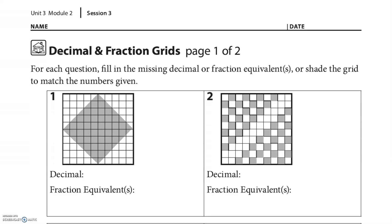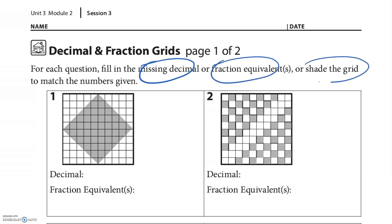Hey everyone, this is Unit 3, Module 2, Session 3 homework. As always, please try these as many as you can and pause the video, then maybe use the video to check your work. If you get stuck, use it for some help, then pause it as soon as you think you get it and try the next one. This homework starts off with models of fractions and they want you to fill in the missing decimal, the fraction equivalent, or shade — sometimes it's more than just one of the things.